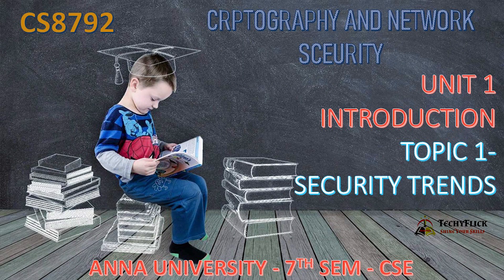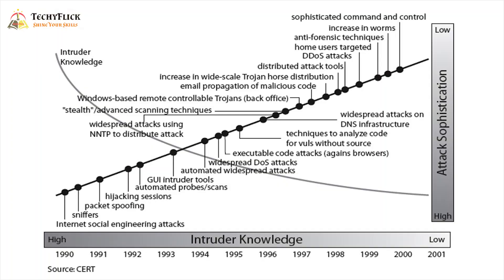Unit 1, Introduction. Let's talk about the first topic, which is Security Trends. This is the security trend diagram. Let's talk about 1990 and 2001, because our book is the third edition of William Stallings' book. That's why we have mentioned the year 2001.